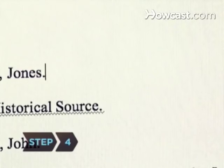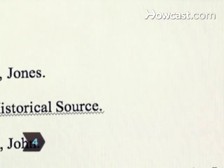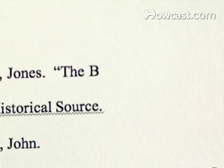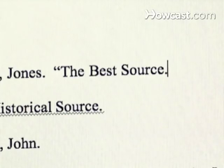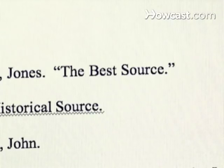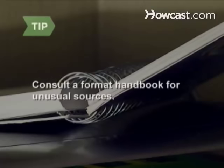Step 4. Cite the title of an article in a book, magazine, or internet source two spaces after the period. The title should be followed by a period and be contained inside quotation marks. Consult a format handbook for how to cite less common sources.